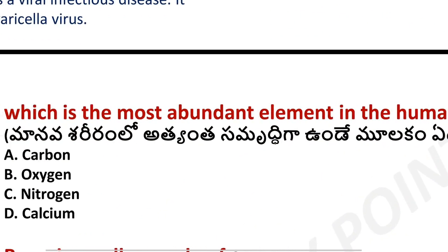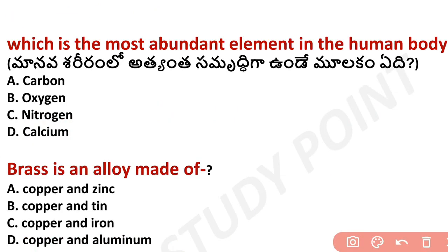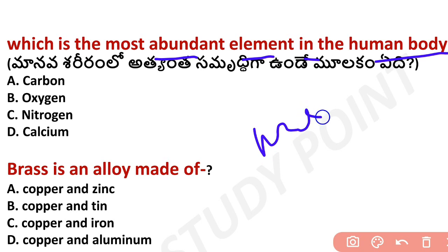Next question: what is the most abundant element in the human body? Our body is about 70-80% water. When we choose the elements, the answer is oxygen. Oxygen makes up approximately 70% of the human body by mass.